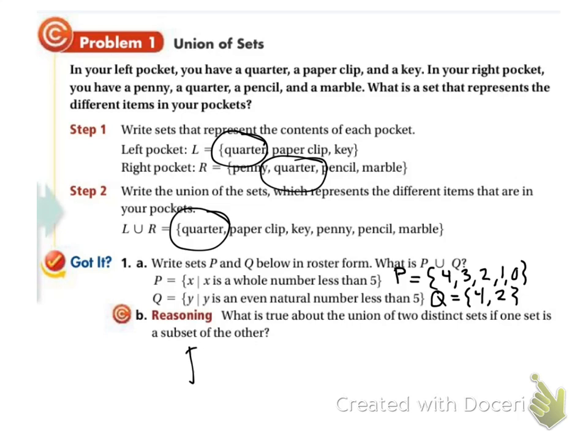So then, finding the union of those sets. I'm going to list what they both have in them. 4, because they both have 4. 3 is in P. They both have 2. 1 is in P. And 0 is in P. So there we go. I listed the items that were in both sets.